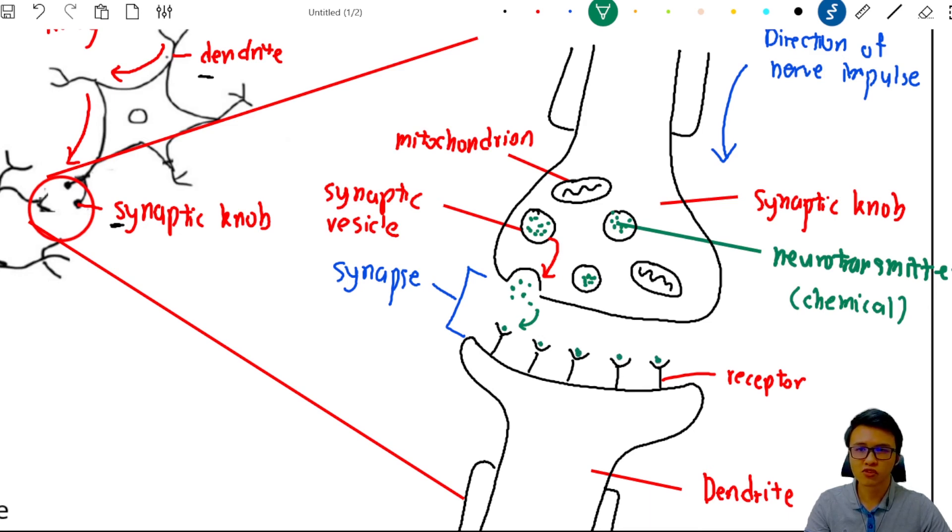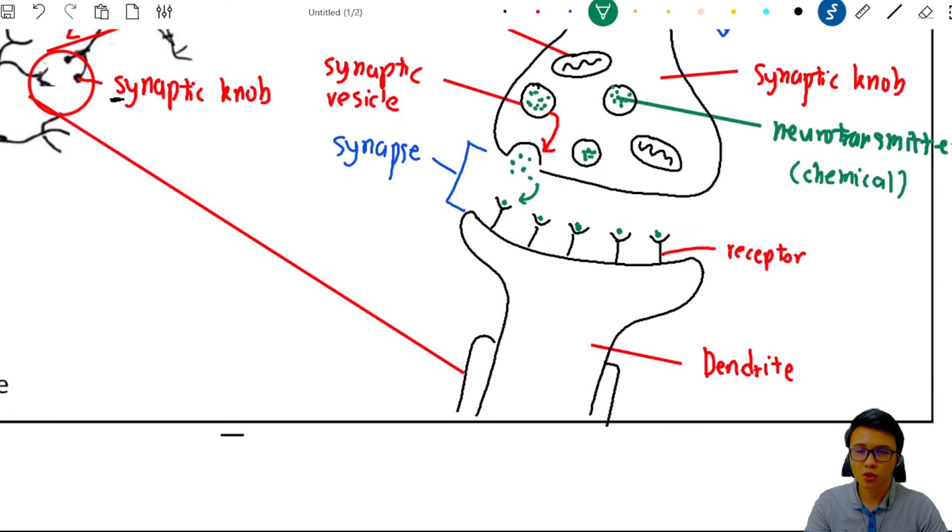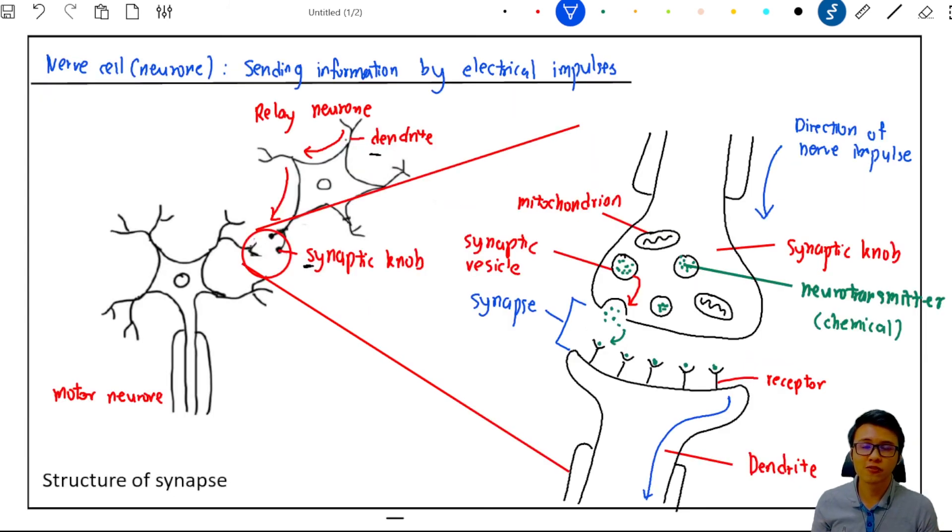Once the receptor receives the neurotransmitter, it will convert this neurotransmitter, the chemical signal, into the electrical signal. And then again, this dendrite will send the electrical signal to the synaptic knob of this nerve cell. Alright, so that's it for the whole process of transmission of nerve impulse.